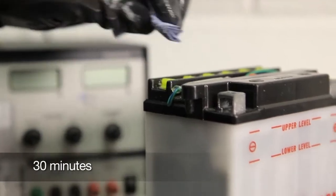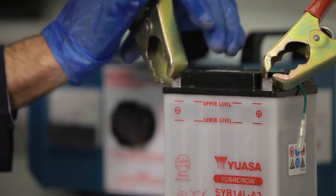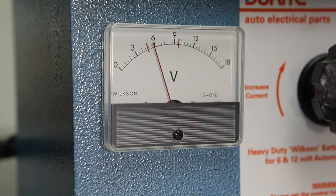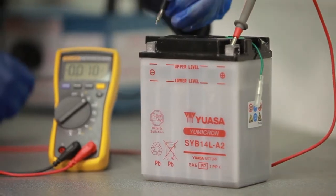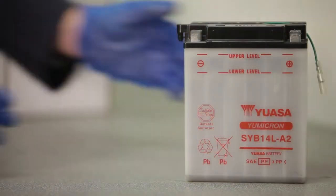Allow the battery to stand for at least 30 minutes, then load test it at three times its ampere-hour rating for 15 seconds, or use an automatic battery tester to determine the battery's condition, and then check the voltage. This should be a minimum of 12.4 on a 12-volt battery. The battery is then ready to be fitted.